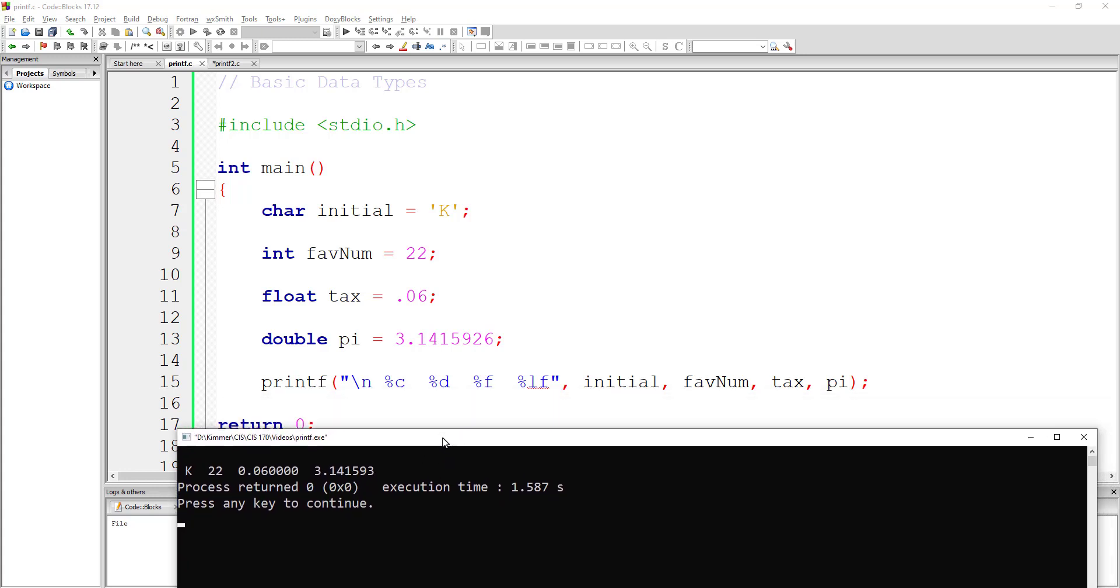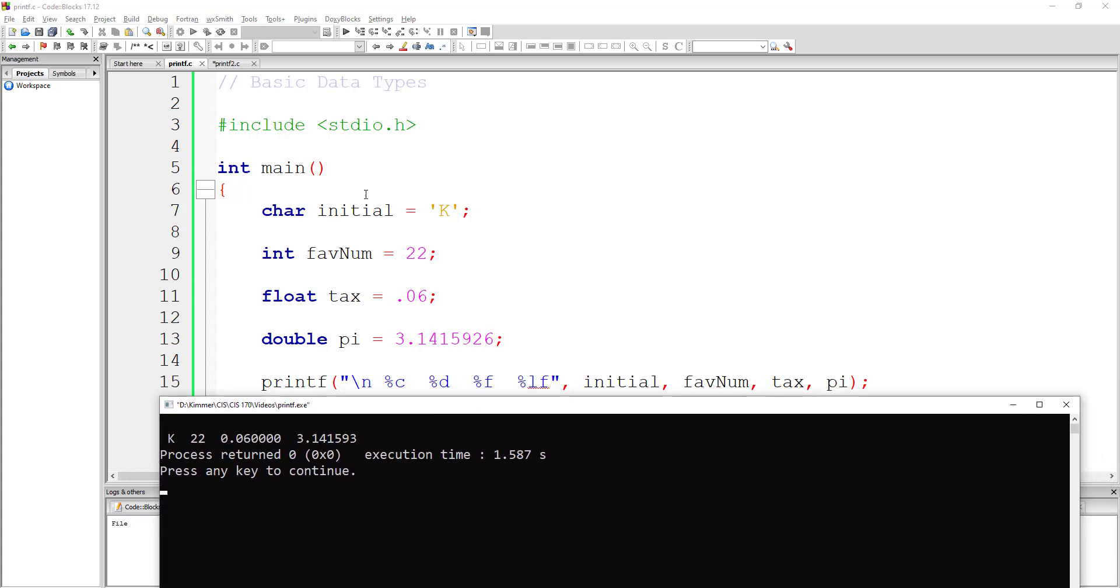Okay. So, those are the four basic data types you're going to use. Always think of what kind of data you're going to be holding when you declare your variables. All right. That's it for now. We'll talk soon. Bye.